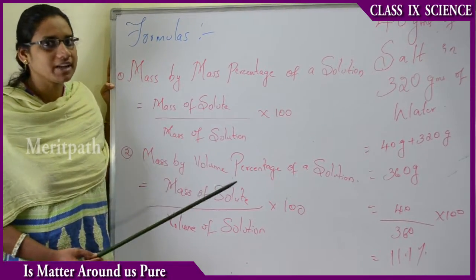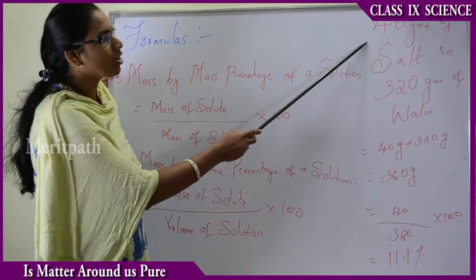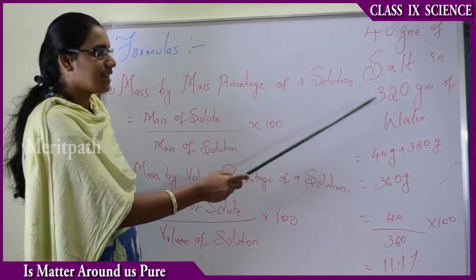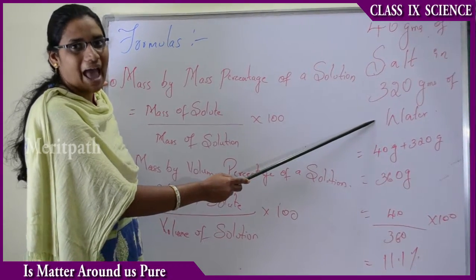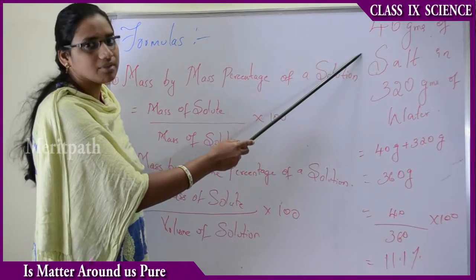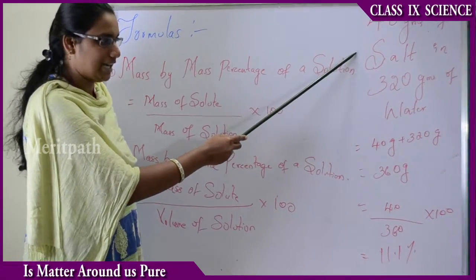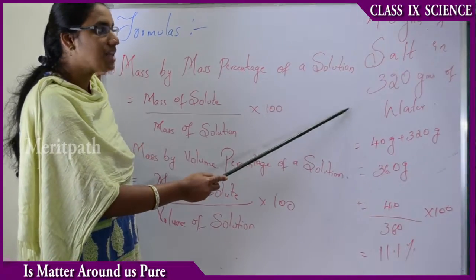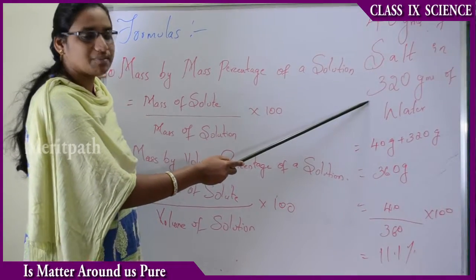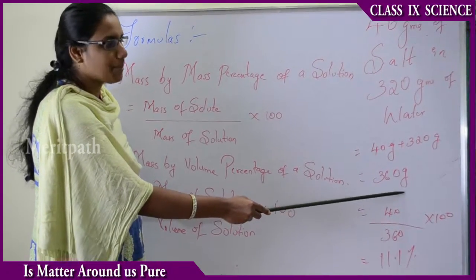Let us see one example for getting more clarity on these solution formulas. When we take 40 grams of salt in 320 grams of water, the 320 grams of water acts as solvent because it is the larger quantity, and 40 grams of salt acts as solute because it is the lesser quantity. The mass of solution will be 40 grams plus 320 grams, which equals 360 grams.